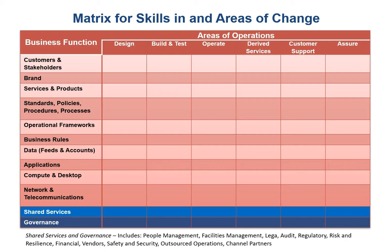Across the different business functions are common roles which design, build, and test. There are roles for operations, for providing derived services, for supporting customers, and for assuring delivery. These roles apply to the business functions as well as the underpinning governance and supporting shared services.